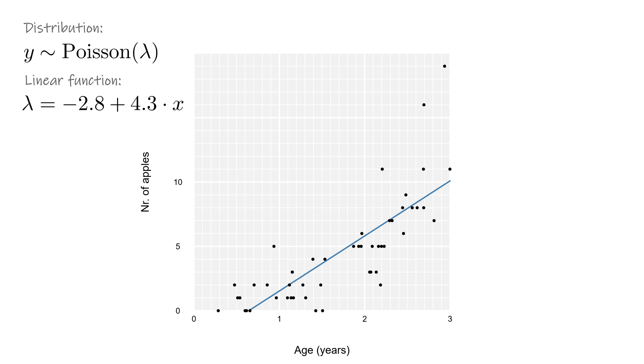However, since we cannot count a negative number of apples, the rate also cannot be negative. At its lowest, lambda is equal to zero, for an average of zero apples per year. This is where a problem occurs. A line is not bounded to zero and infinity. It extends all the way from minus infinity to plus infinity.